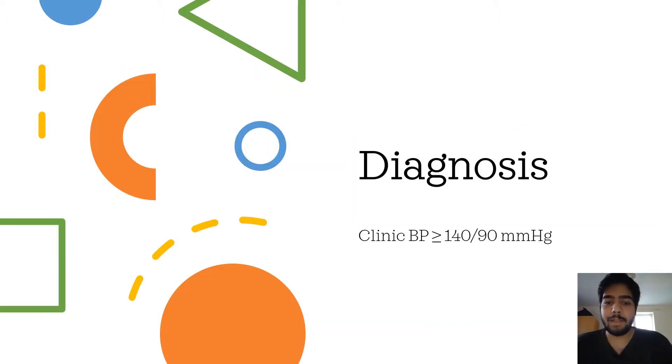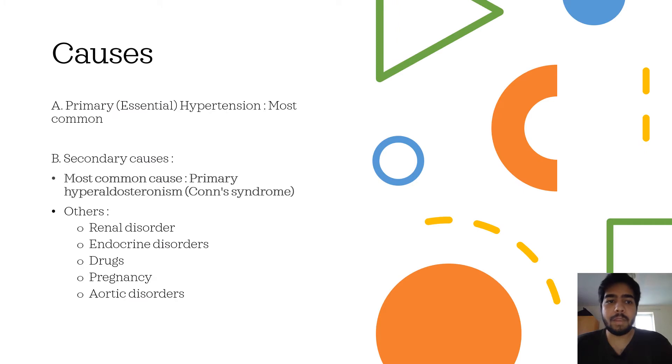Talking about the diagnosis, hypertension is diagnosed when the clinical blood pressure is greater than or equal to 140 by 90 millimeters of mercury. There are two types of hypertension: primary hypertension, which is the most common one, and secondary hypertension.